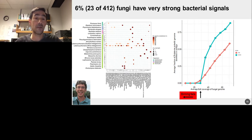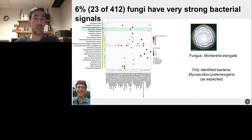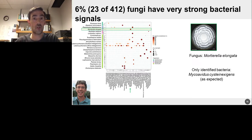What we found out of 412 fungal genome projects at the time was that about 6% have a very strong bacterial signal similar to the Ralstonia signal in Monosporiascus. The fungal genomes are color coded by fungal phylum, and the bacteria found are at the bottom. The darker and larger the dots, the more data there was and the more complete the bacterial genome assessed. Mortierella elongata is known to have an endobacterial partner called Mycoavidus, so this was expected and showed that this pipeline holds promise.